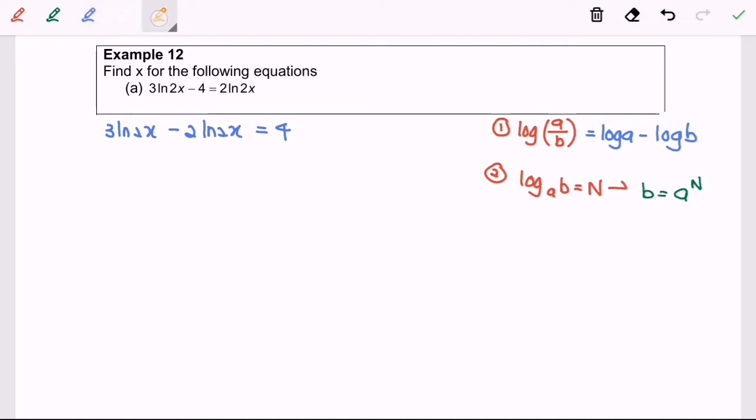As we can see, we have a common term which is ln 2x and ln 2x. So for the first part, we have 3 ln 2x minus 2 ln 2x. From here, we can simplify it to become ln 2x equals 4.